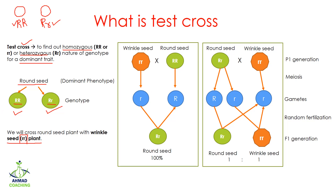So I will cross these two plants individually with wrinkle seeds. This round shape plant I will cross with a wrinkle shape seed which has small r small r, and this one I will also cross with the wrinkle seed. During meiosis, the alleles separate from each other. In the homozygous case we have only capital R gametes, but in the heterozygous case we will have two types of gametes: capital R and small r. The wrinkle plant produces only small r gametes.